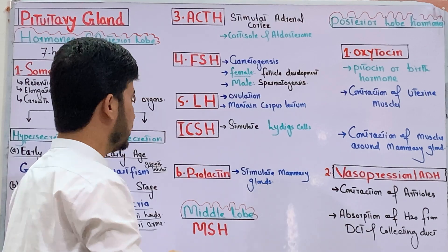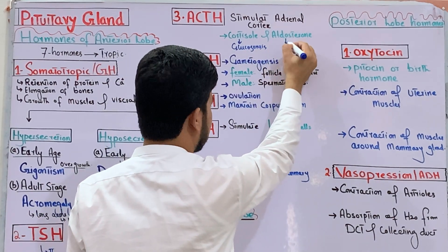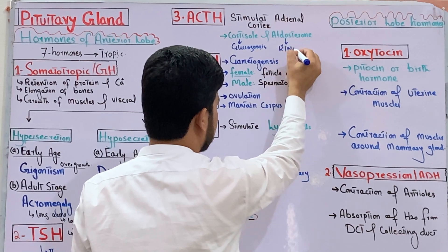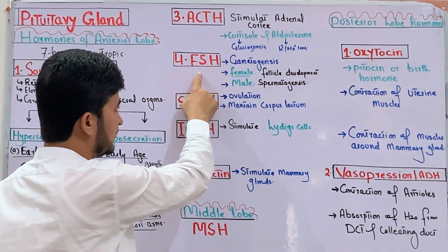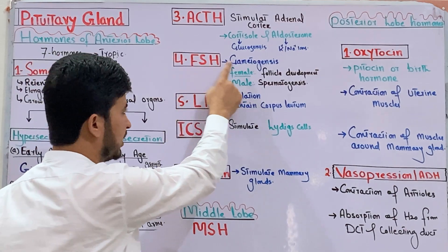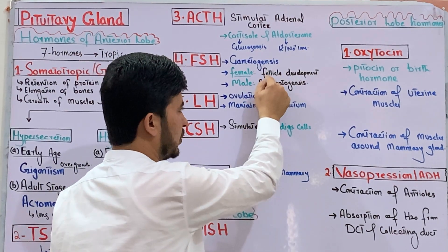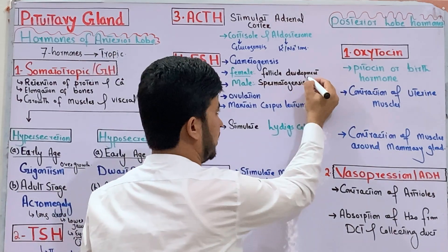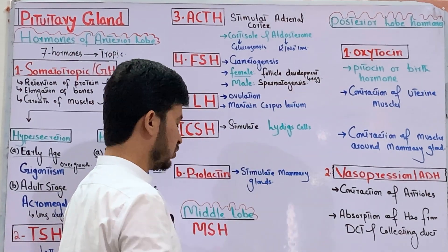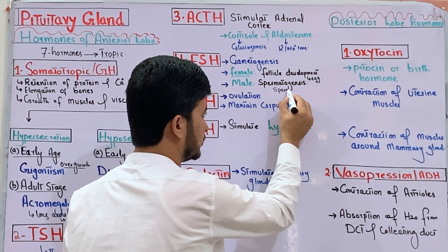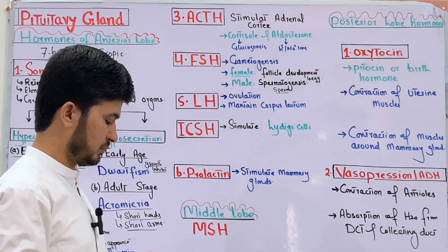Another hormone relates to iodine retention and cortisol secretion for gluconeogenesis. The anterior lobe also secretes FSH — follicle stimulating hormone — which stimulates follicle development in females and spermatogenesis in males.